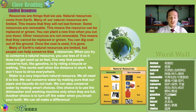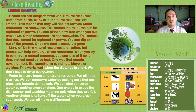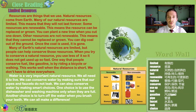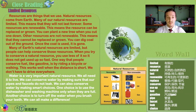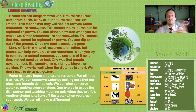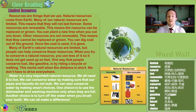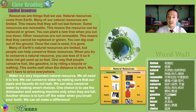Many of Earth's natural resources are limited — think about stone and water. One way that people conserve fuel like gasoline is by riding a bicycle or walking. This may work well when the distance is short, and we really learn that we don't have to drive everywhere.